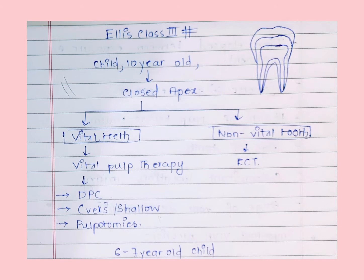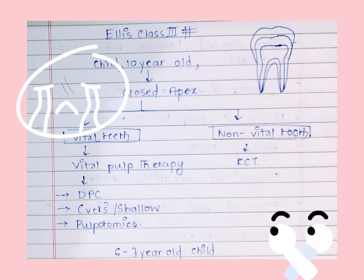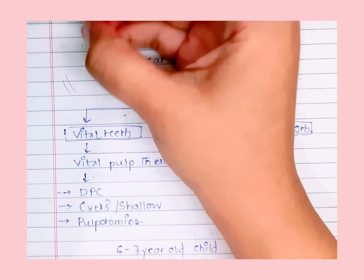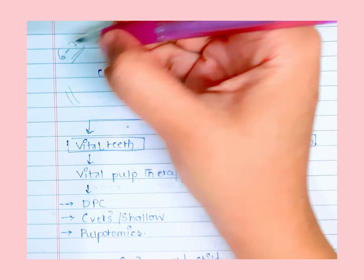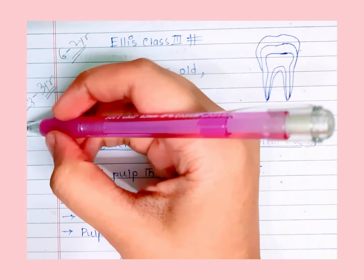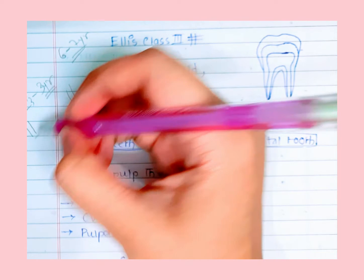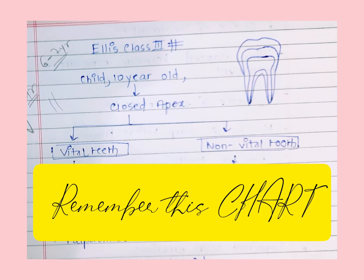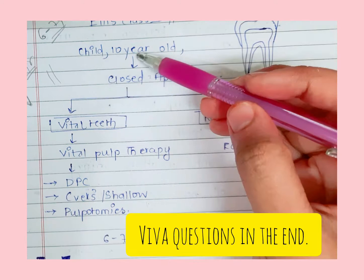Consider an LAQ like this: a 10-year-old child who met with an accident and fractured an anterior tooth — write about the possible treatment options. Keep in mind that anterior teeth erupt at about six to seven years of age, and it takes about two and a half to three years for completion of root closure. So in a young permanent tooth the apex is open, but by age 10 there is a good chance the apex is closed.